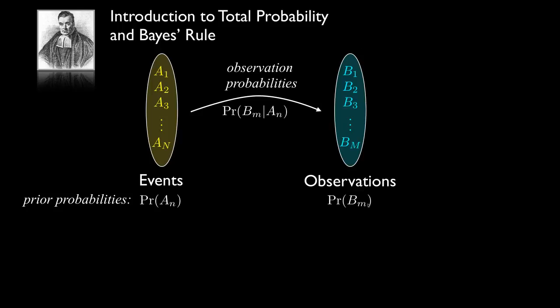These observations will also have a probability for each one of them occurring — a probability law. We can think of this as the set of probabilities on the observations if we know no other information. So we have probabilities on the underlying events, conditional probabilities on the observations given the underlying events, and the unconditional probabilities for the observations — the total probabilities for events in the observation space.